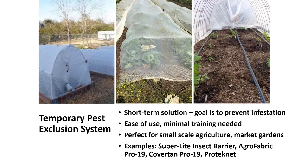Here are the basics of a temporary exclusion system. The main principle is to stop the moths or insects from getting to the host plants. The temporary system is a short-term solution and the goal is to prevent infestation of insects. They are fairly easy to use and minimal training is needed for this kind of exclusion system to be implemented on small farms or market gardens.